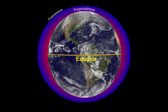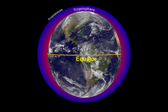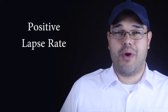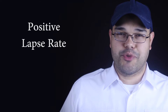The height of the tropopause varies widely, from as low as 23,000 feet over the poles during the winter to as high as 63,000 feet over the equator. In the troposphere, temperature decreases with an increase in height. This trend of getting colder as we go higher is a positive lapse rate. Average temperature at the surface in mid-latitude is around 15 degrees Celsius, and temperature falls to about minus 56 degrees Celsius at the tropopause.